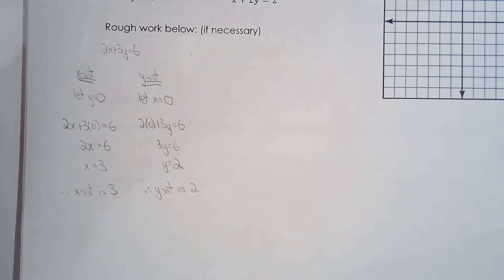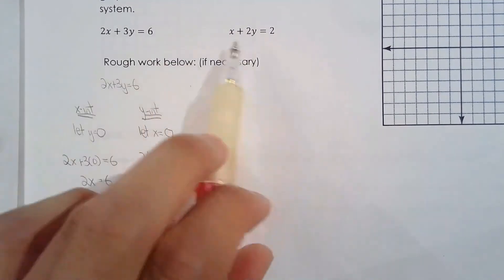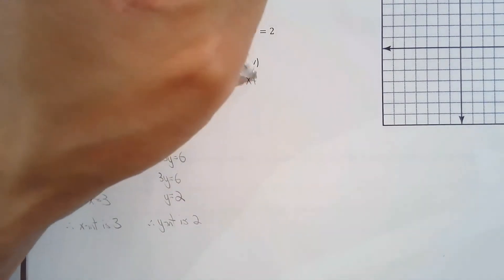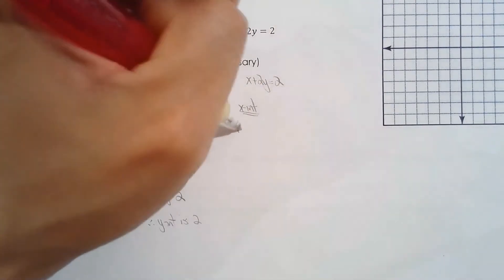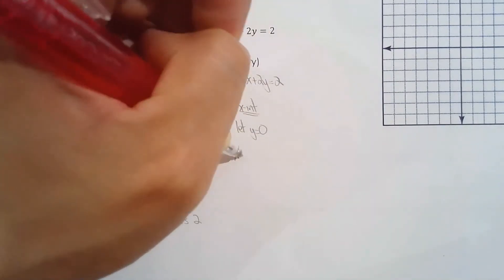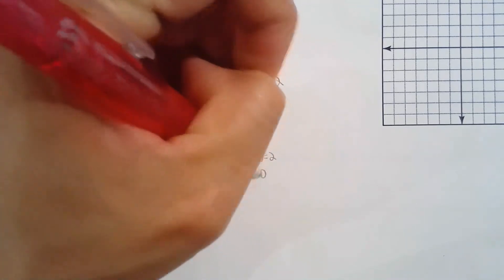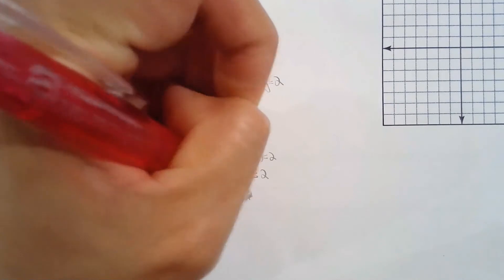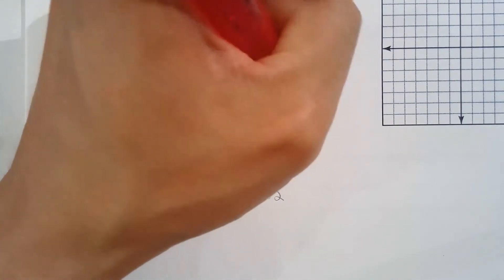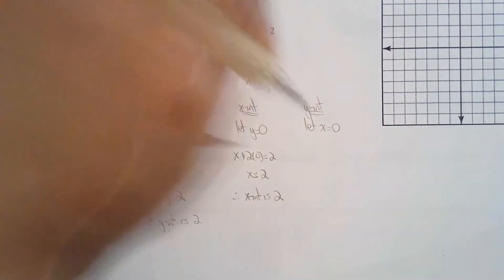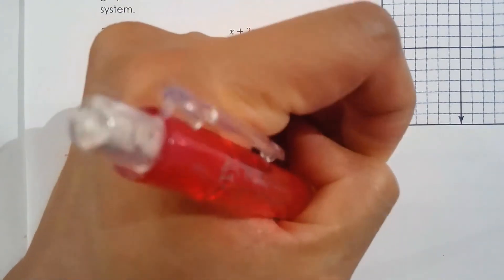Now I'm going to find the intercepts of the other line, x plus 2y equals 2. Let y equal zero to find the x intercept: x plus 2 times 0 equals 2, so x equals 2. Therefore the x intercept is 2. For the y intercept, let x equal zero: 0 plus 2y equals 2, so 2y equals 2, divide both sides by 2, giving y equals 1. The y intercept is 1.